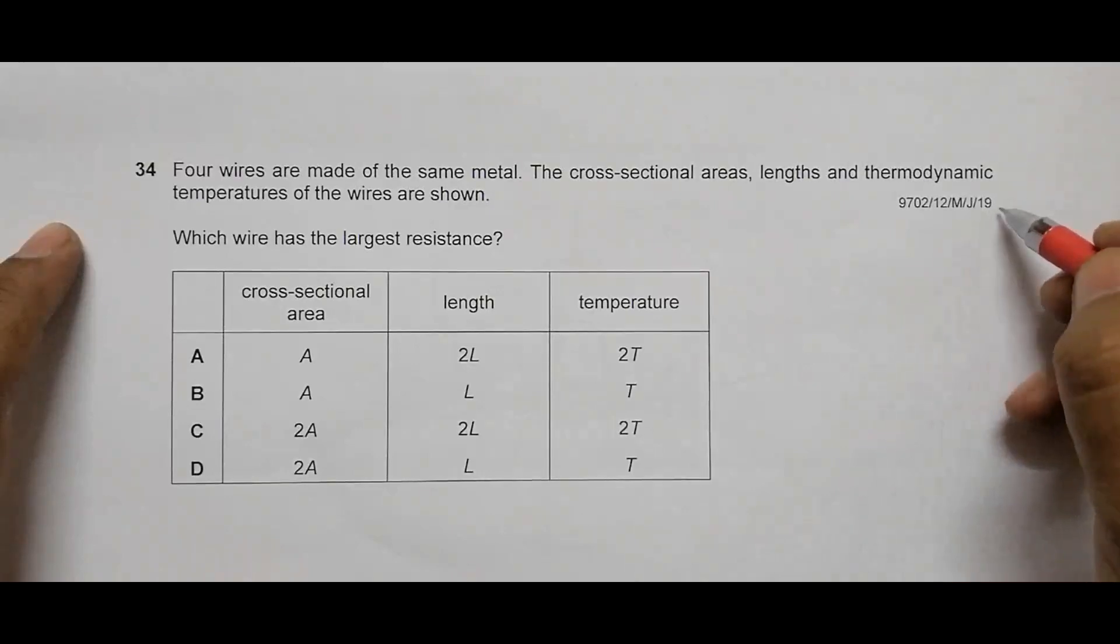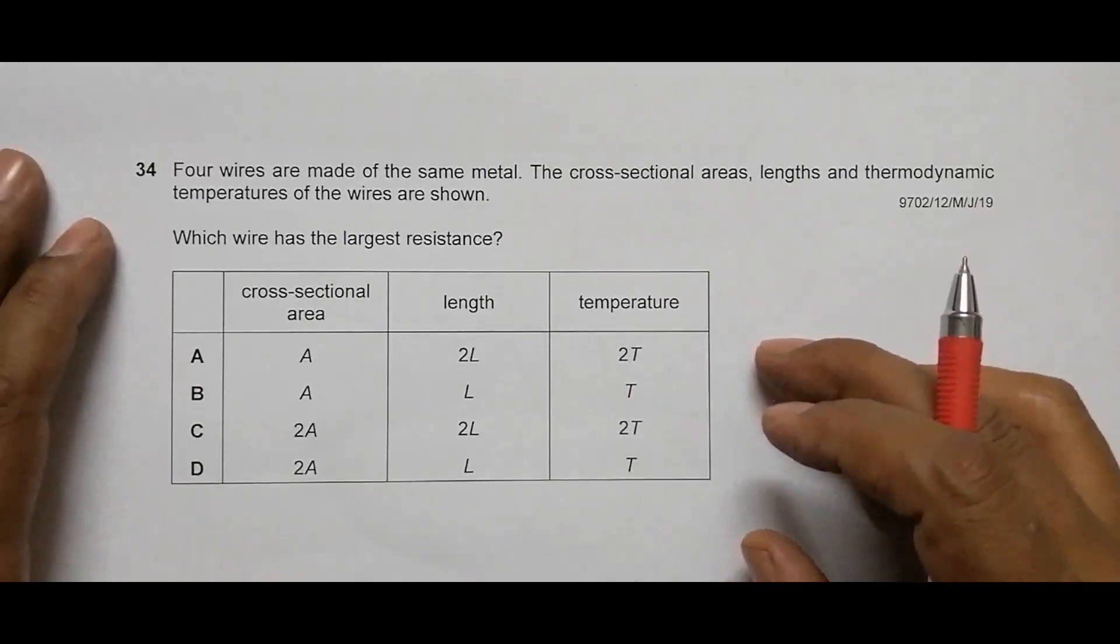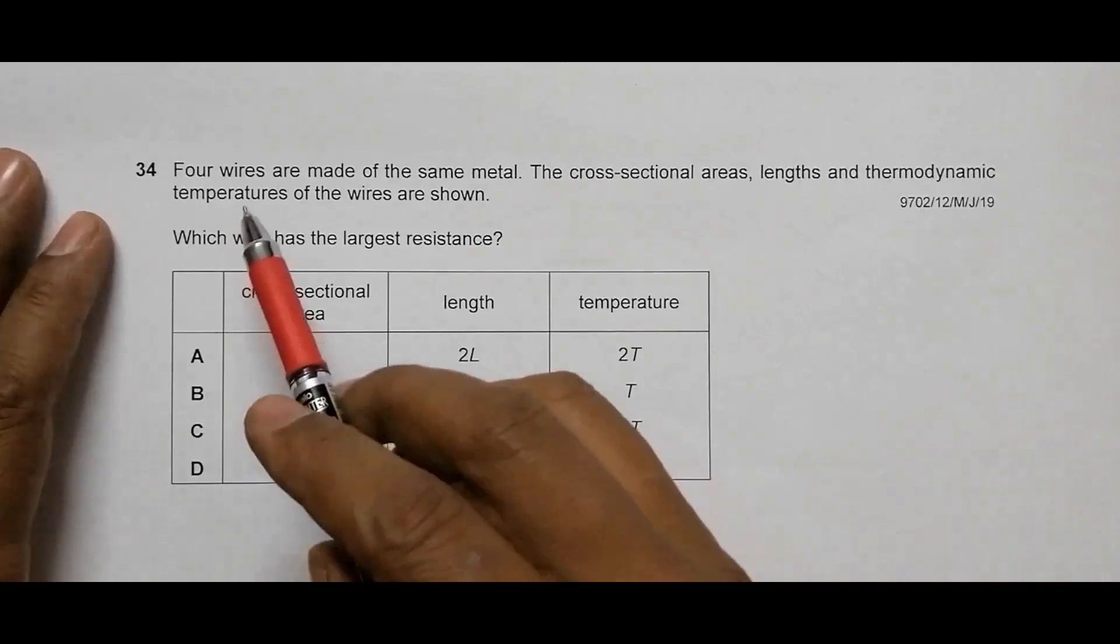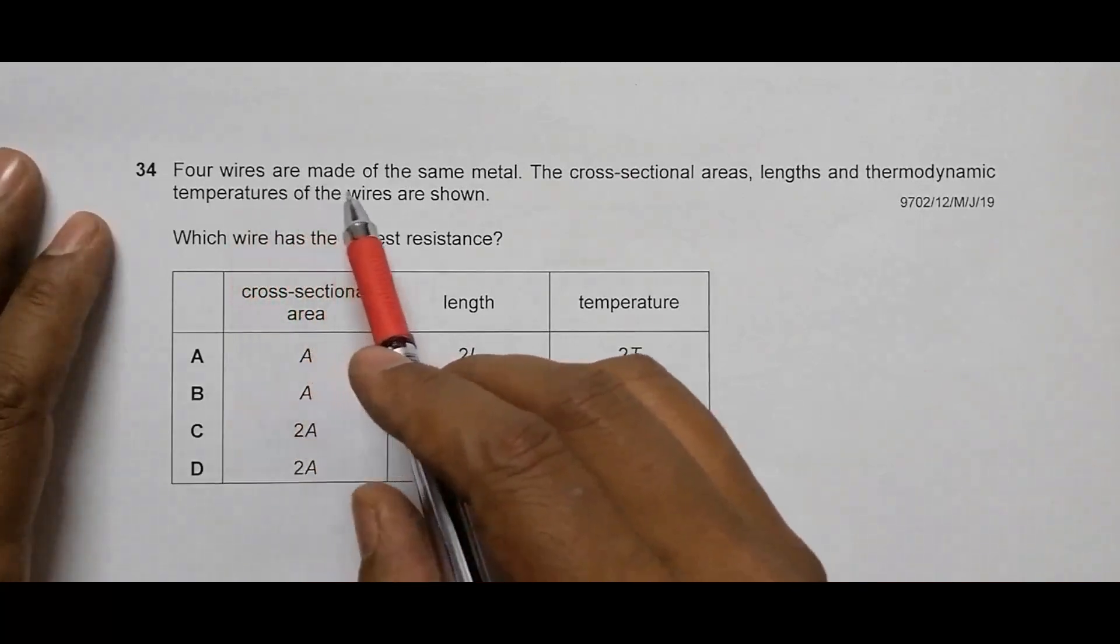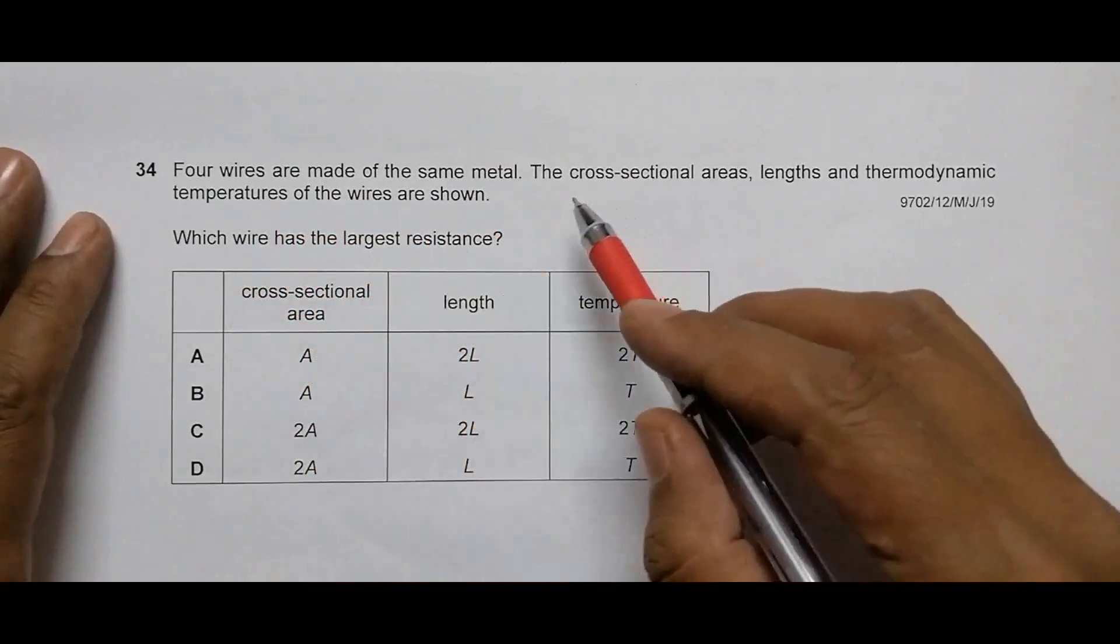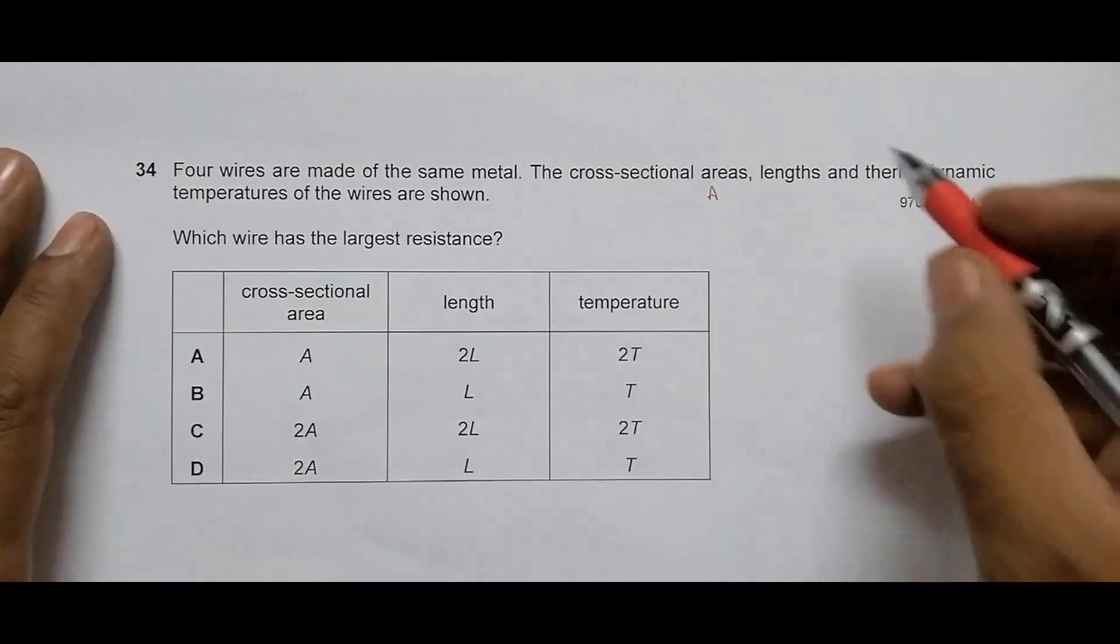Hello folks, this is 2019 major paper 1-2, question number 34. The question is related to the chapter on current electricity and is about resistance. It says four wires are made of the same metal, which means their resistivity will be the same. But the cross-sectional areas are different.